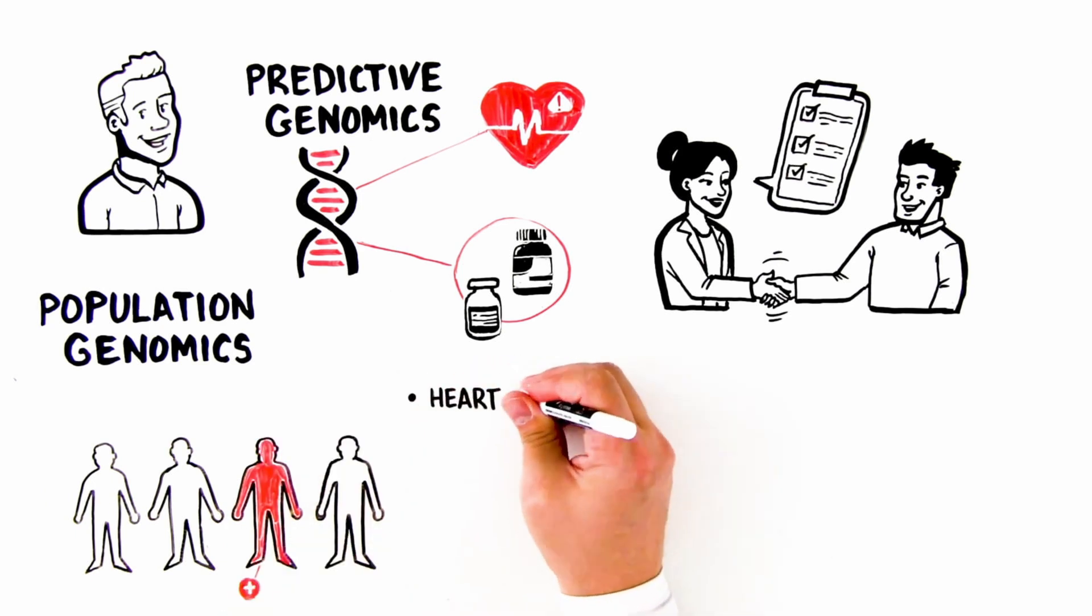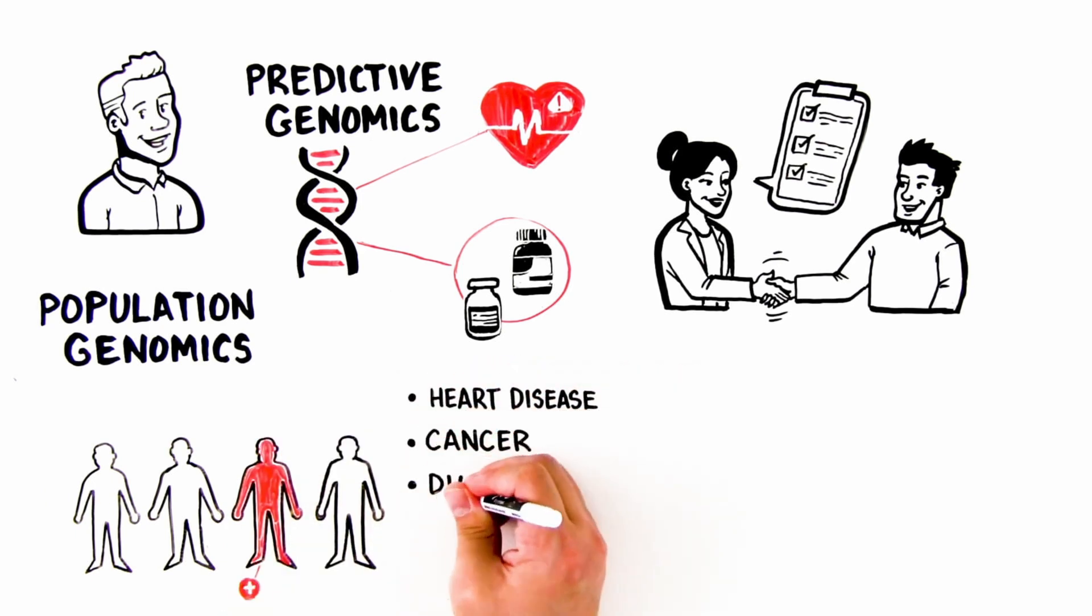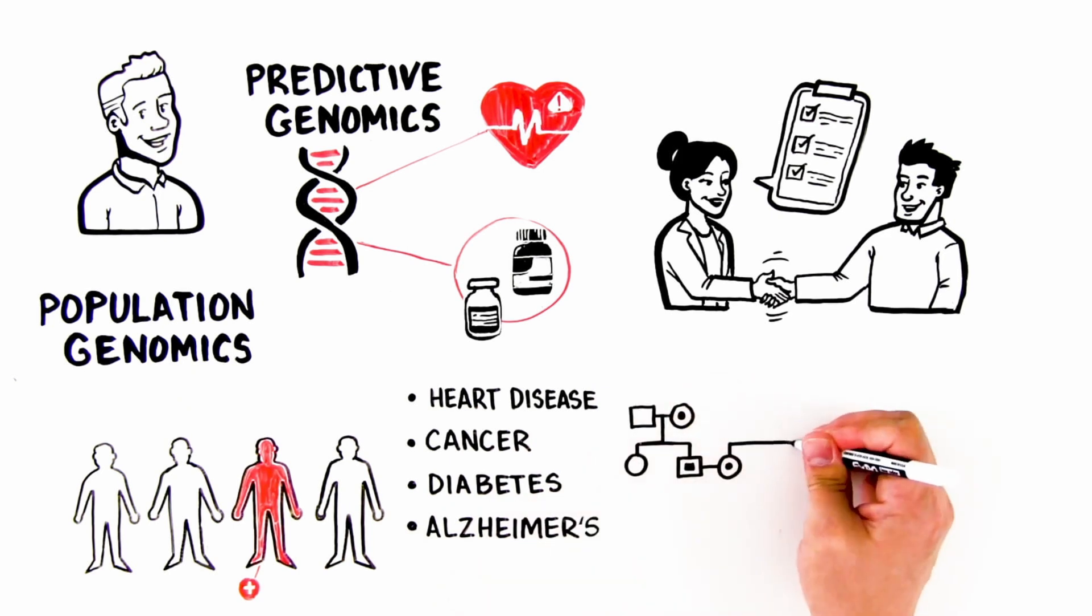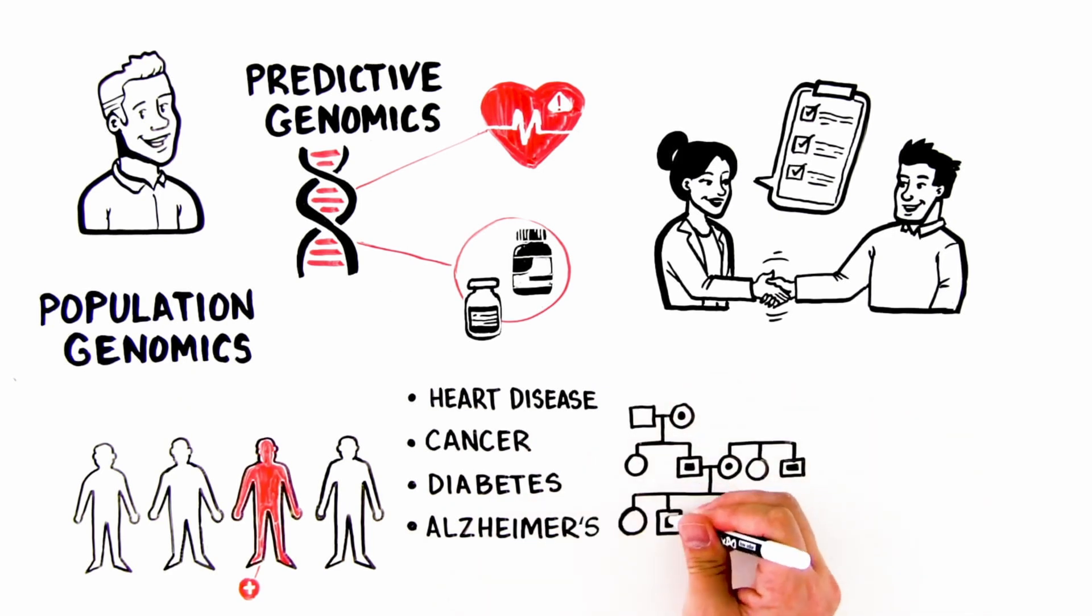For complex human diseases such as heart disease, cancer, diabetes, and Alzheimer's, a single disease trait may be affected by thousands of variants throughout the genome.